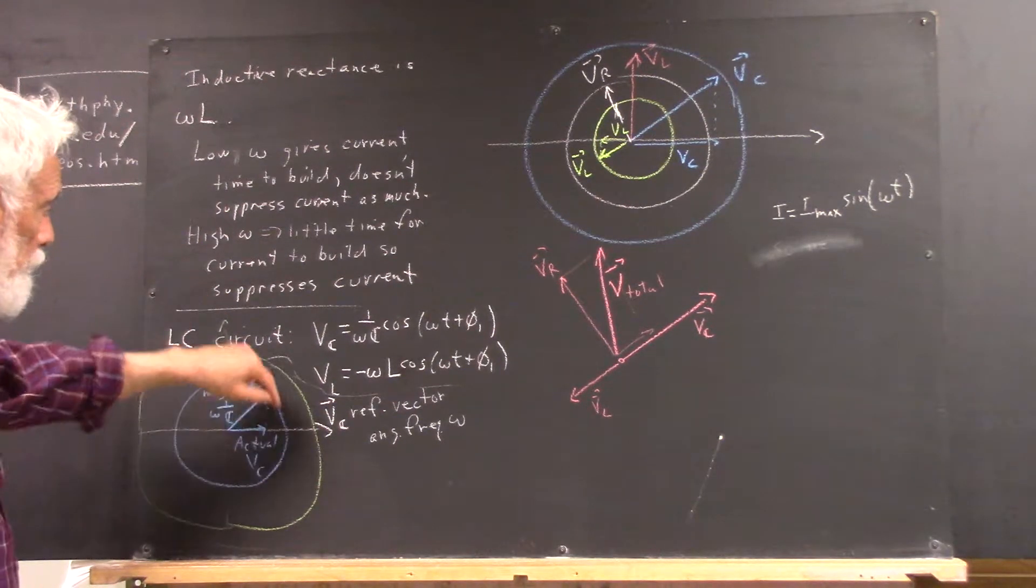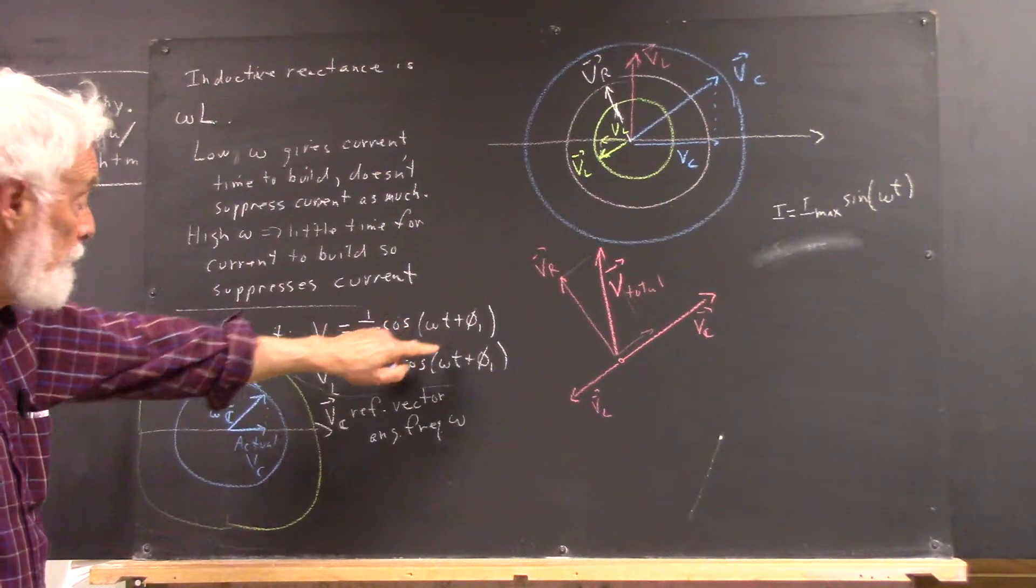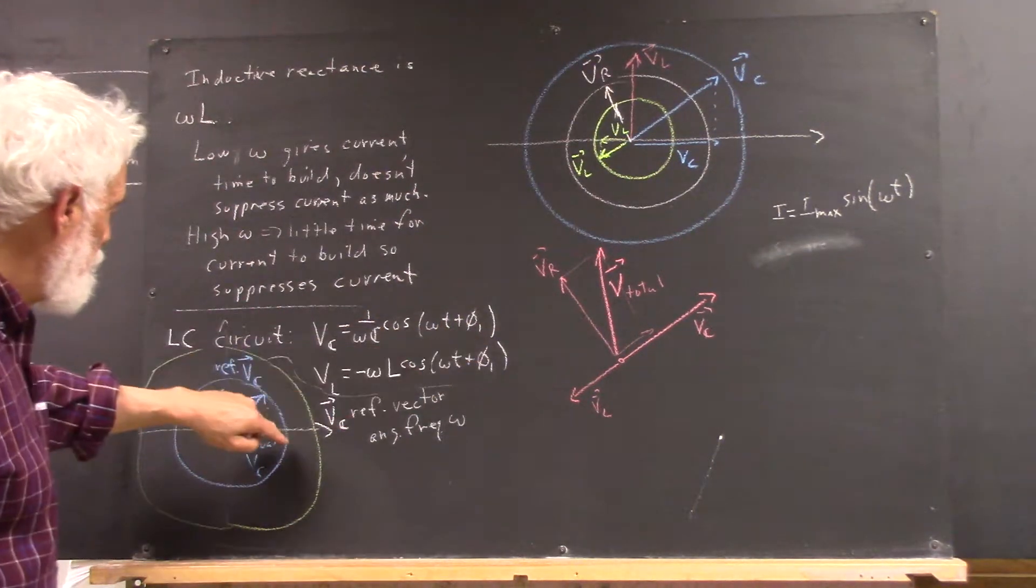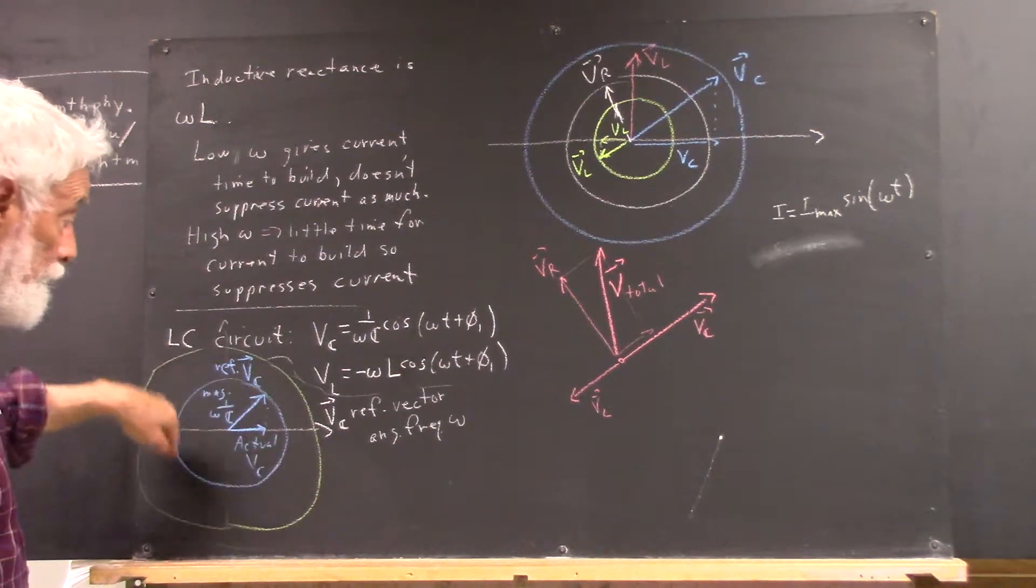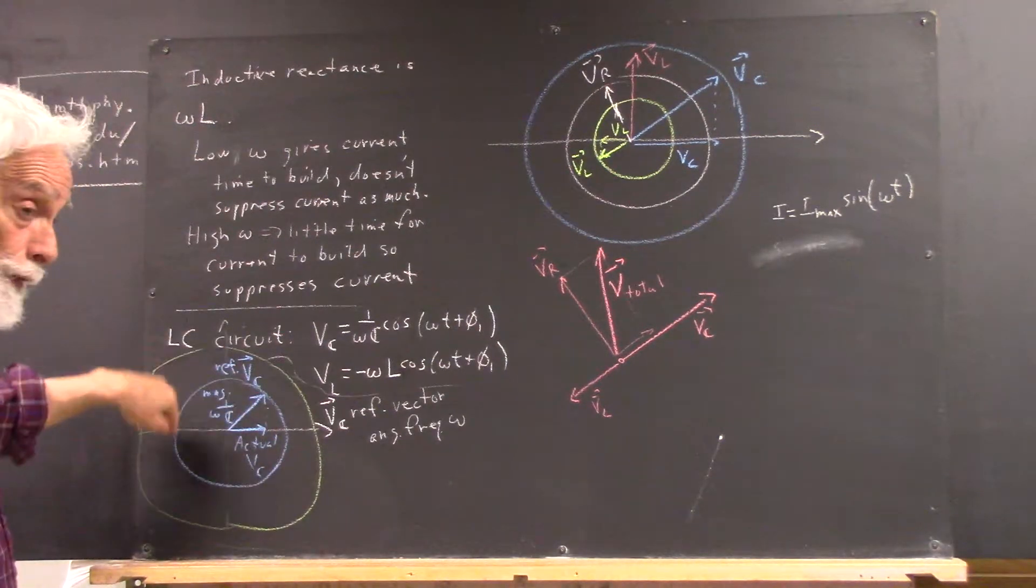As this vector, as omega, as t goes on, omega t plus phi 1 will increase, assuming omega is positive, and you're going to have this vector go around and around this circle.